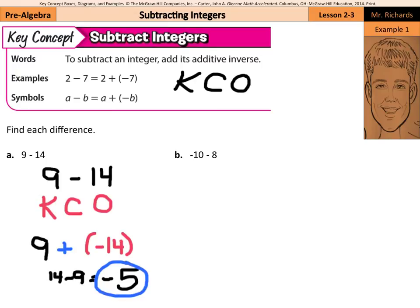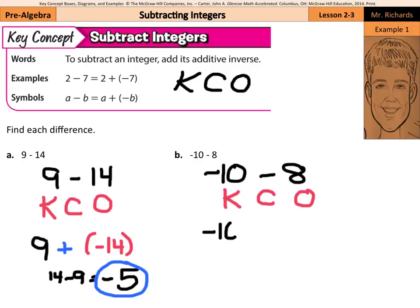So when we're subtracting integers, we can keep change opposite, change it into an addition of integers problem, and just add like we did in the previous lesson. What about negative 10 minus 8? Well, again, if we keep change opposite, we'll have negative 10, the subtraction changes to addition, and the opposite of 8 is negative 8. And so we have an adding integers question now with the same signs, negative plus negative. So we can just add the two numbers up — 10 plus 8 is 18 — and keep the answer negative, so negative 18.